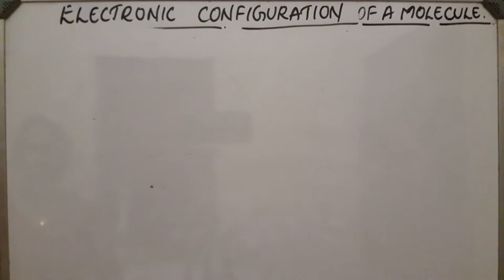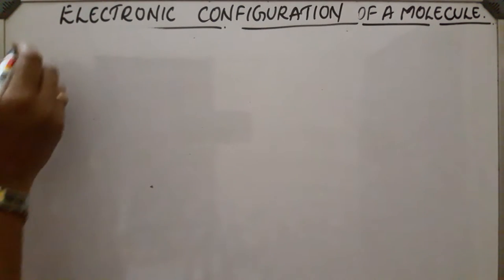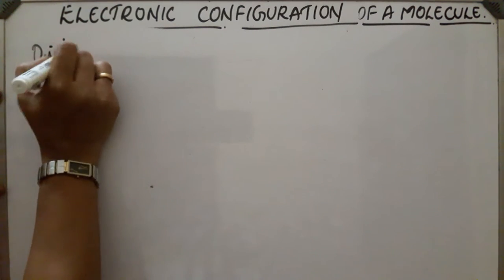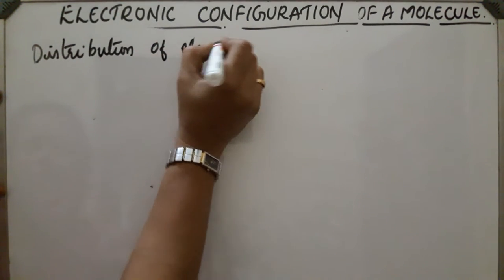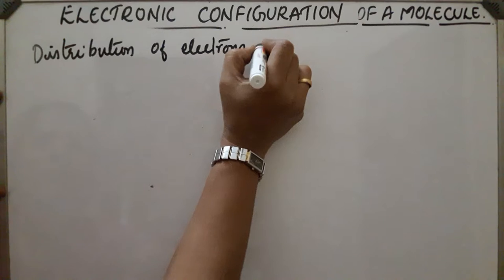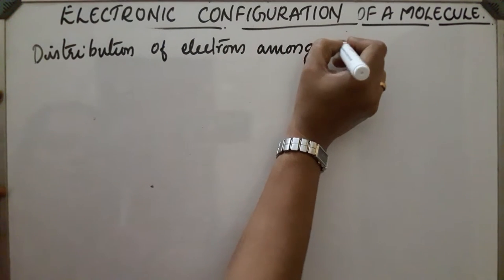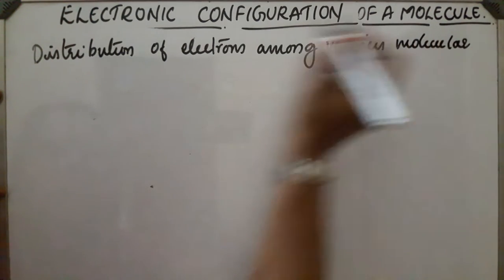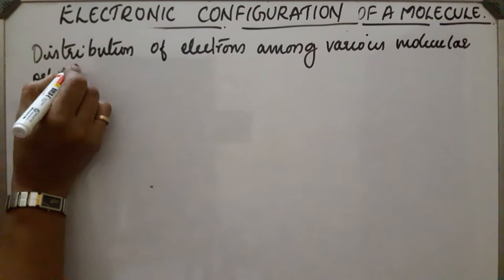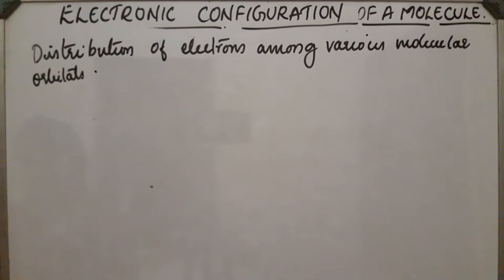Electronic configuration of a molecule. The distribution of electrons among various molecular orbitals is called the electronic configuration of the molecule. This helps us to find important information about the molecule.